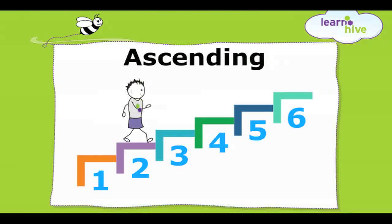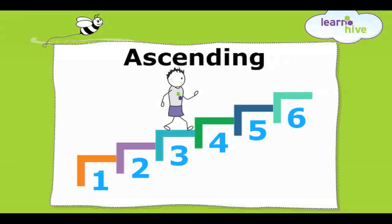Number two is also a number which is bigger than number one. Now Dom climbs even higher to step number three. As he climbs up each step, he is said to be ascending.